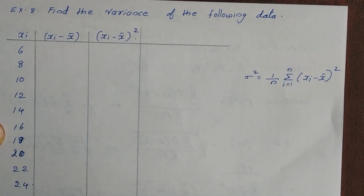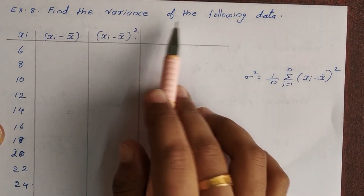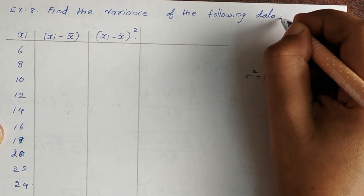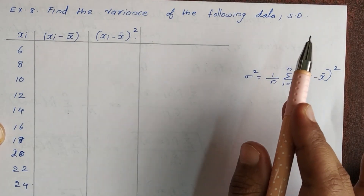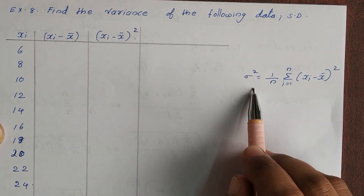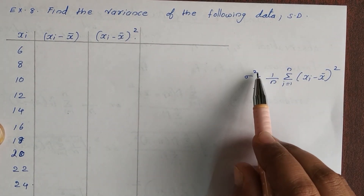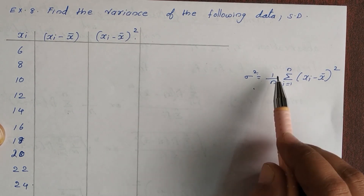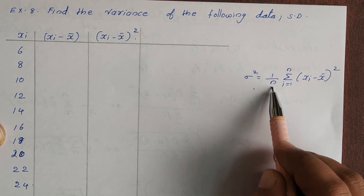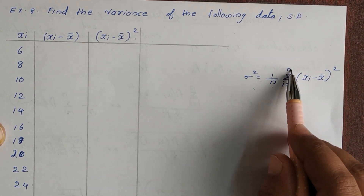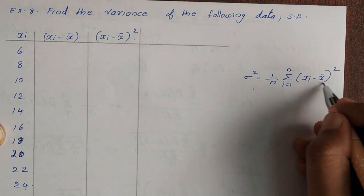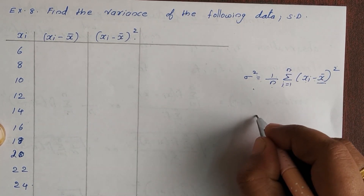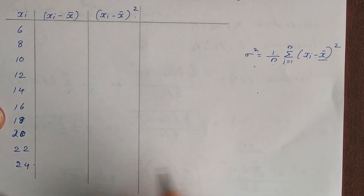Example 8: Find the variance of the following data. The variance is given by sigma squared equals 1 by n into summation i equals 1 to n of (xi minus x bar) the whole square. The first step is to find x bar.